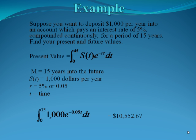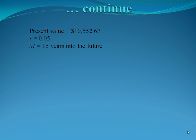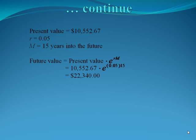Now we'd like to find the future value. So remembering our present value, our rate, and the number of years we're going to invest, our future value is present value times e to the rm. Our present value was $10,552.67 times e to the, our rate is 5%, and the number of years we're going to invest is 15. Multiplying these all together, we get a future value of $22,340.